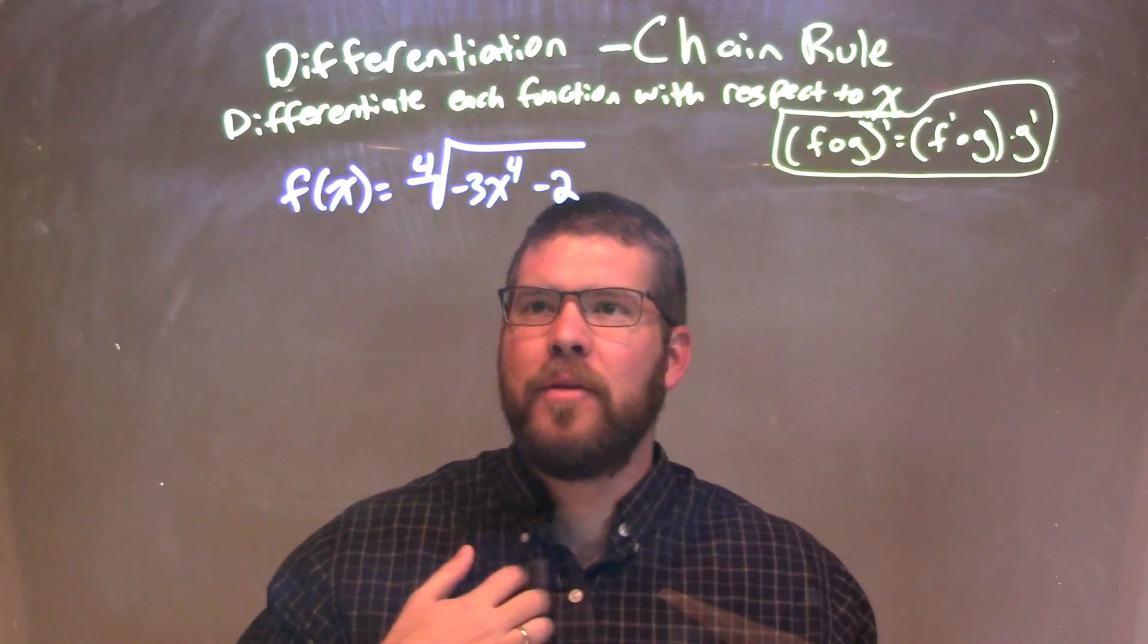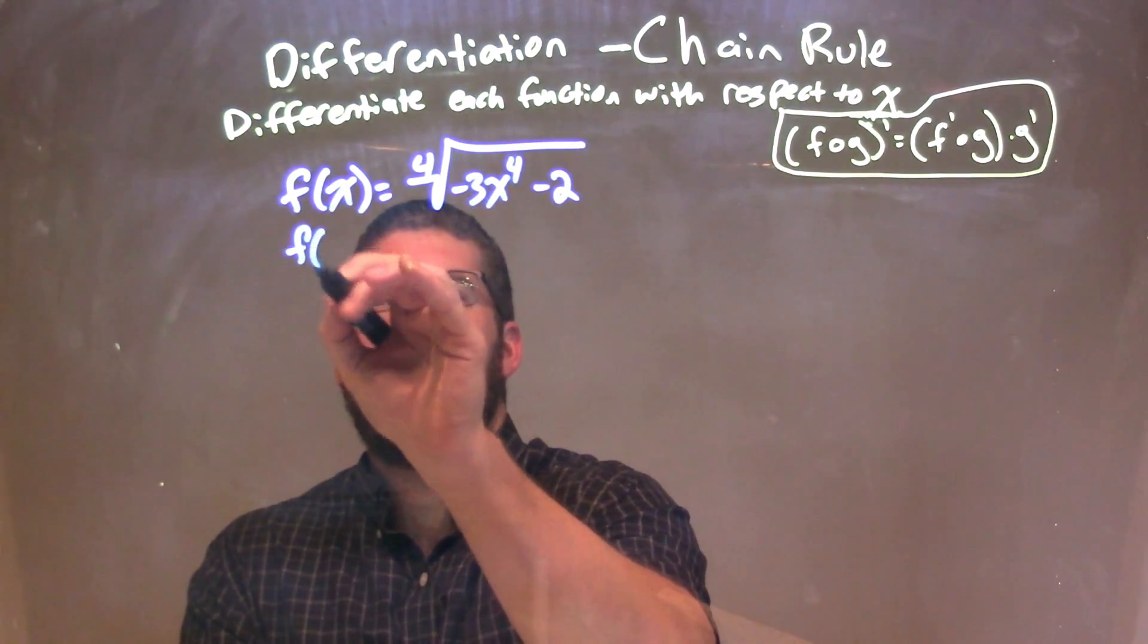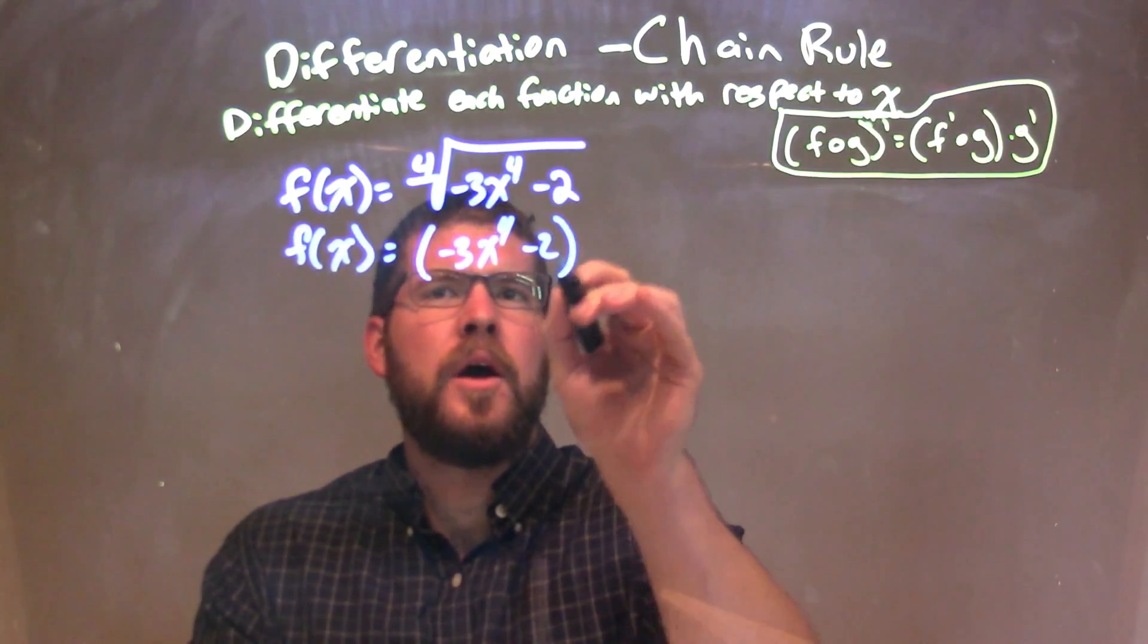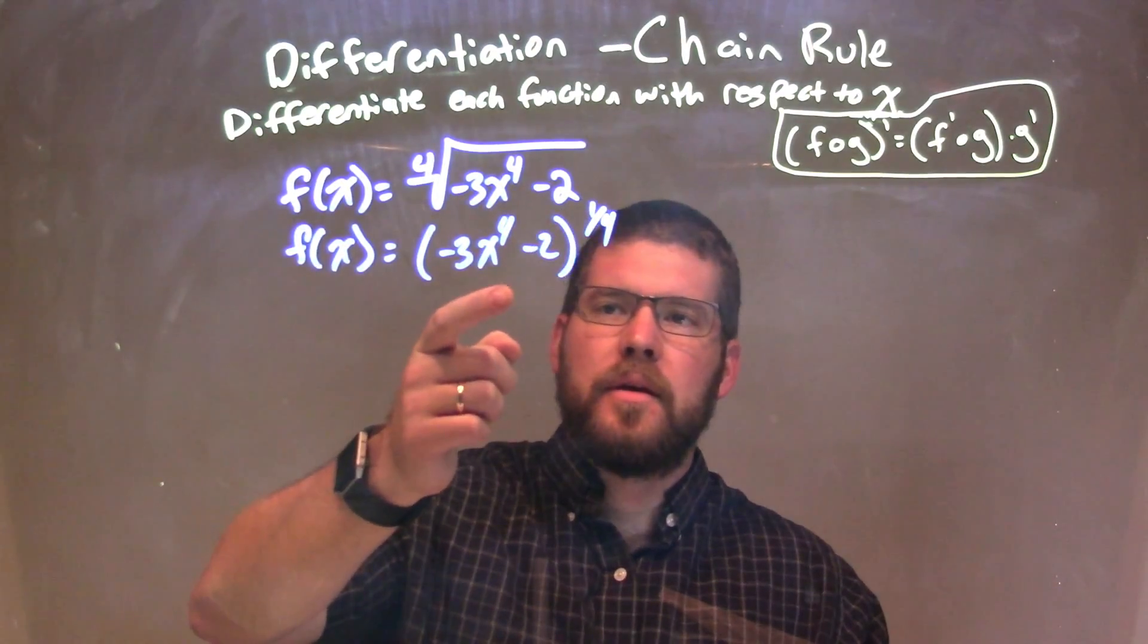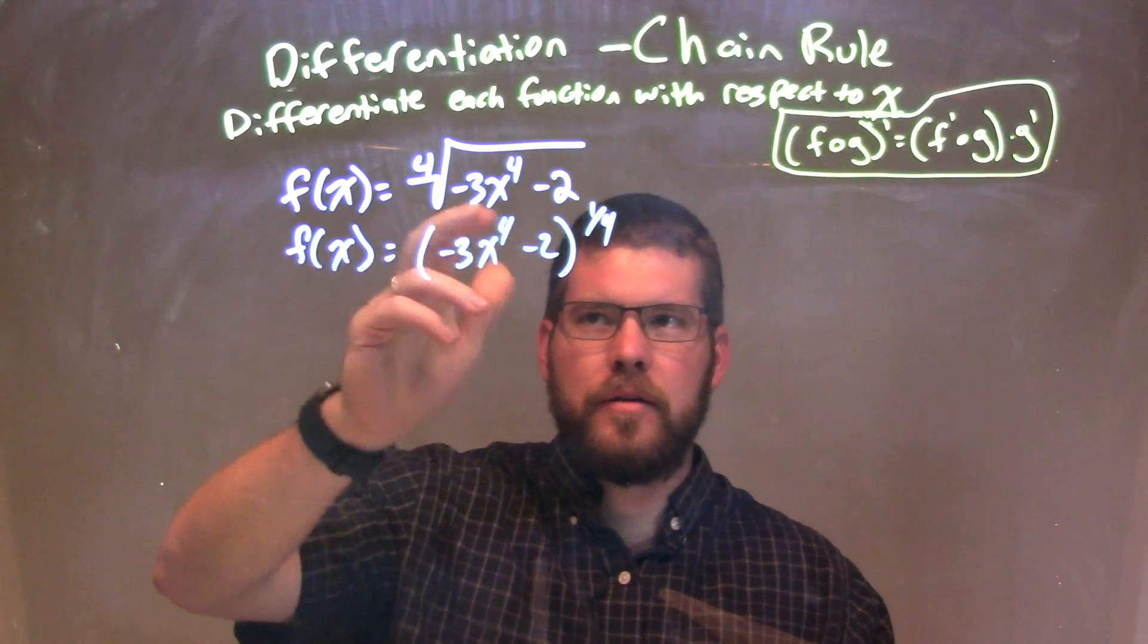When I'm deriving, I don't necessarily like to see roots there. So I'm going to rewrite this to be f of x is equal to parentheses negative 3x to the fourth minus 2, all to the one-fourth power. So at this point here, these are the same function. Let's write it to the one-fourth power instead of the fourth root.